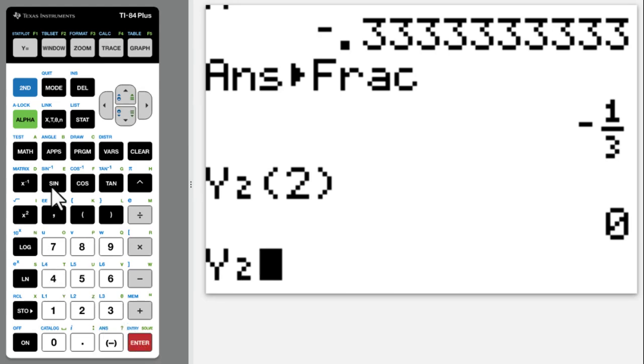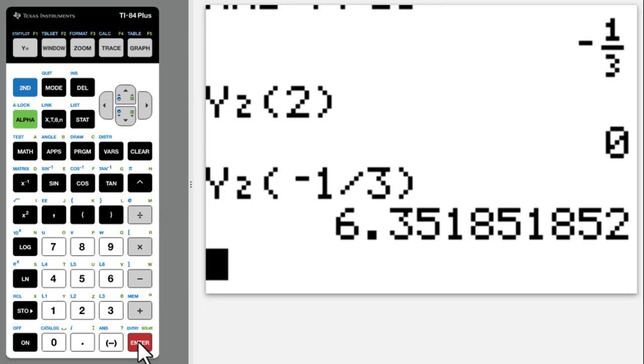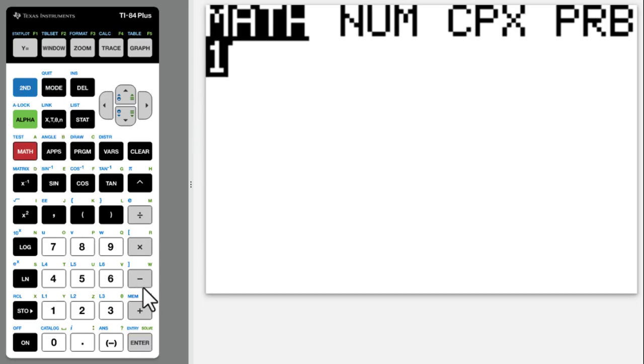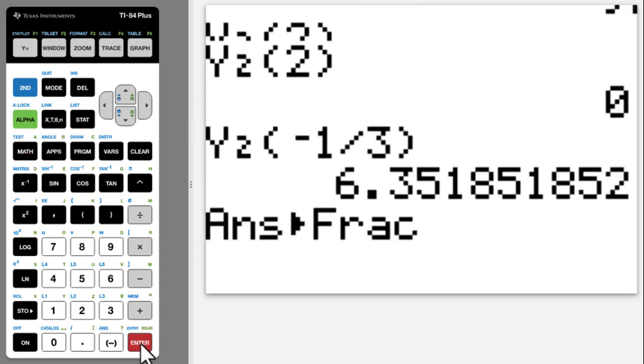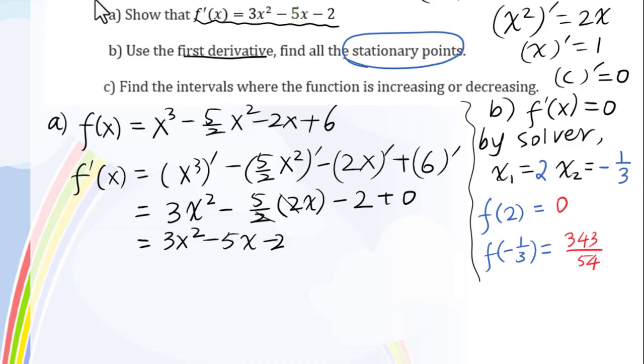Do the substitution, enter, enter, enter, enter, enter to get fraction. The coordinates for all the stationary points will be 2, 0 and negative 1 over 3, 343 over 54.